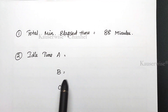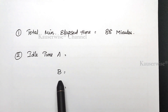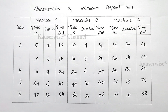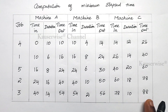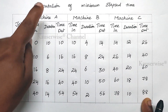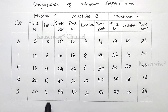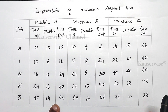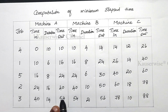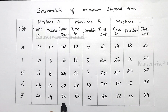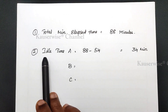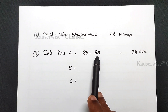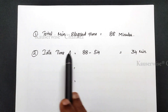Now we find idle time for machines A, B, and C. For machine A, compare the total elapsed time with the completion time on machine A. Machine A completed all processes with last out-time at the 54th minute, but must wait until the entire process ends. Idle time for machine A = 88 − 54 = 34 minutes.